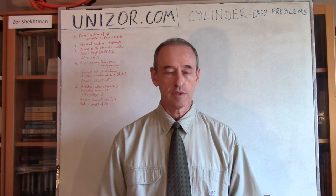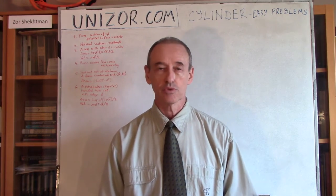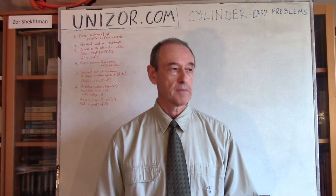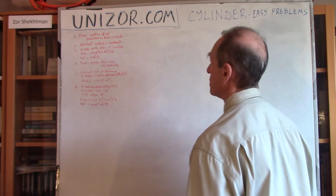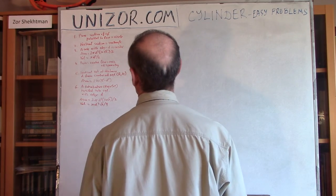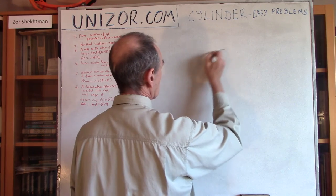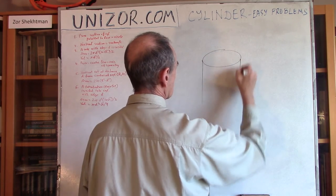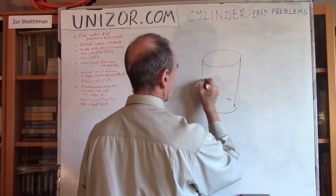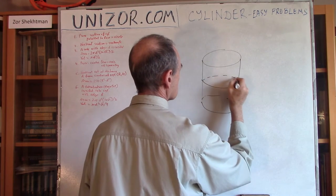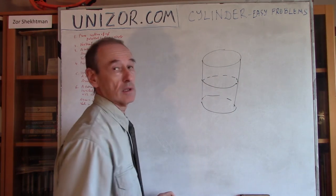These are my solutions to these problems, which you might find other solutions for. Alright, so cylinders and the problems. Problem number one: prove that the section of the cylinder which is parallel to the base is a circle.